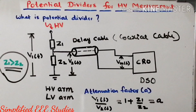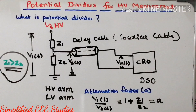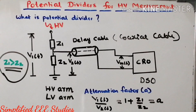This is the basic information regarding potential dividers. To conclude: a potential divider follows the voltage division formula or potential division rule. Moreover, by using a potential divider you can measure high voltage AC, high voltage DC, and impulse voltage. In the next session, I will be discussing the various types of potential dividers employed in high voltage measurement. Thank you very much for watching this video.